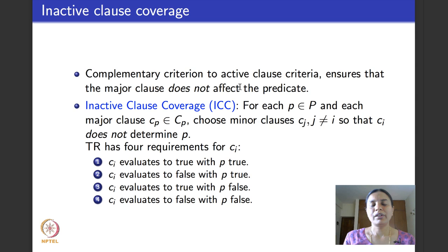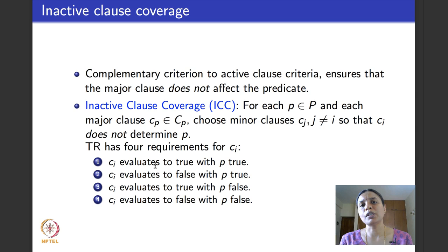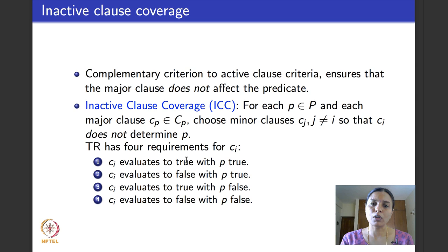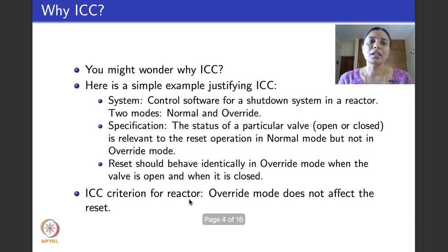To repeat: I fix one clause as the major clause. My goal is to ensure the major clause has no influence on the truth or falsity of P. The four TRs require P to be true in two cases and false in two cases, with the major clause evaluating to true once and false once in each scenario. So the major clause I fix has no influence on the value of P.